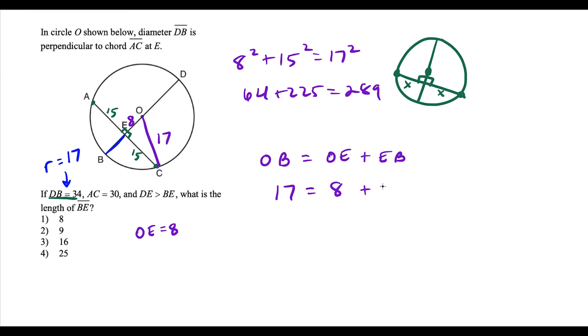OE is eight units long. And if we do plus EB, this tells us that EB, if we subtract eight on both sides, is going to be equal to nine units. So this is going to be choice two.